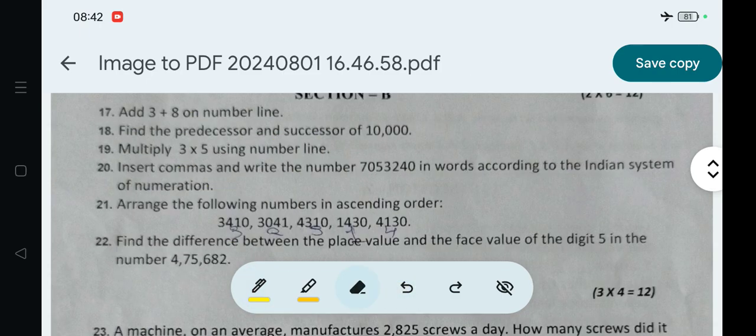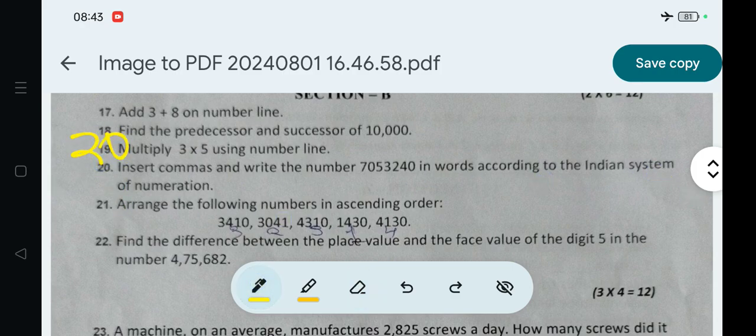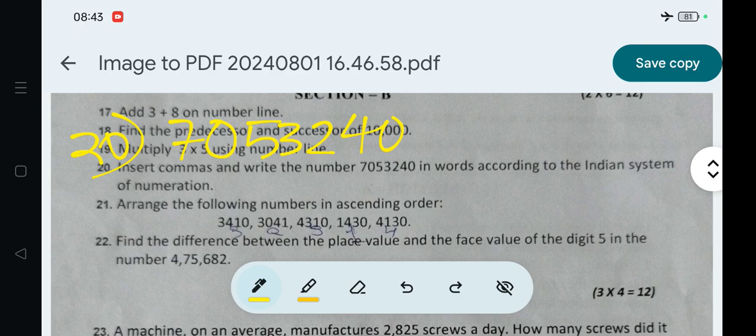Next question number 20. Question is: Insert commas and write the number, this number, in words according to the Indian system of numeration. The Indian system of numeration answer is, let us write the number. Question number 20, the number is 7, 0, 5, 3, 2, 4, 0.